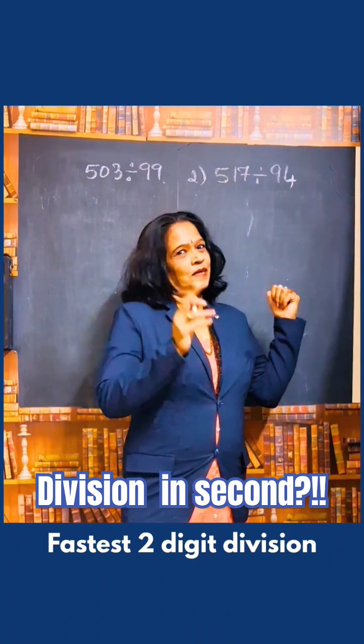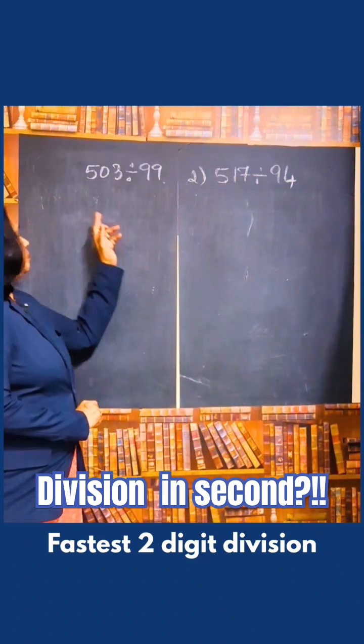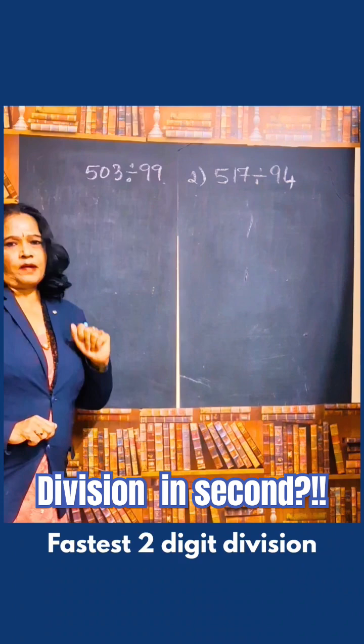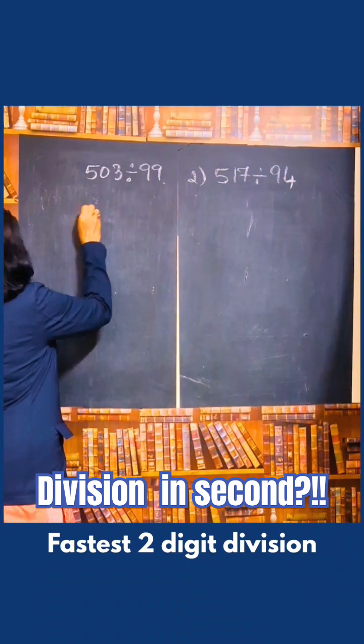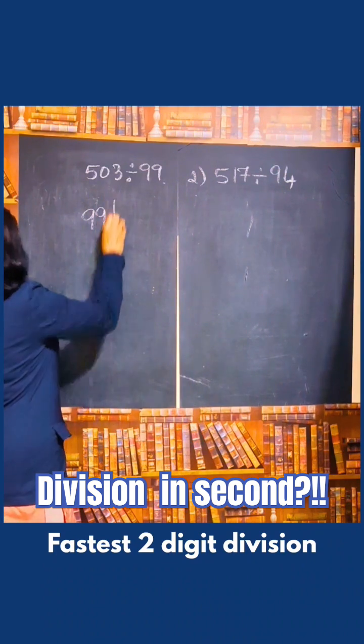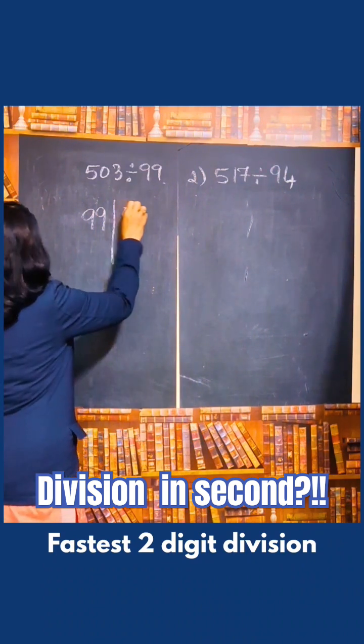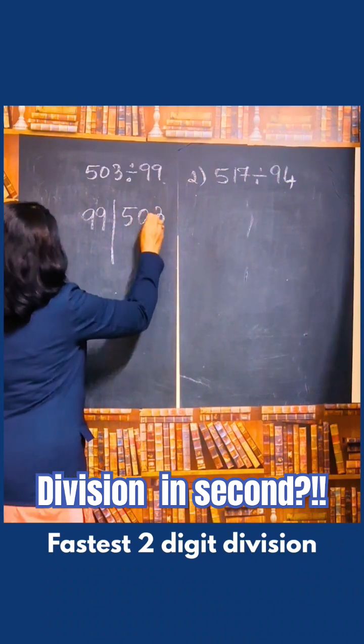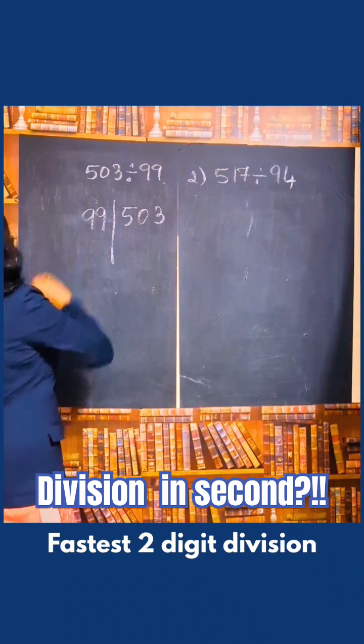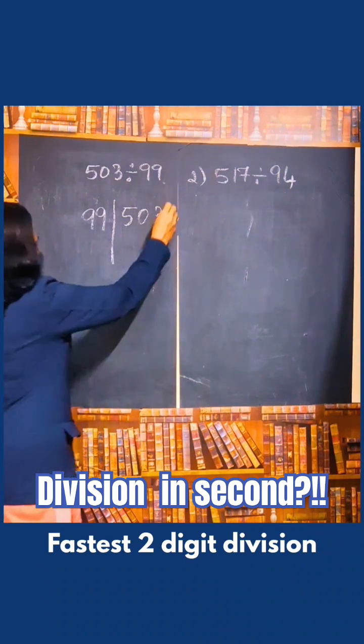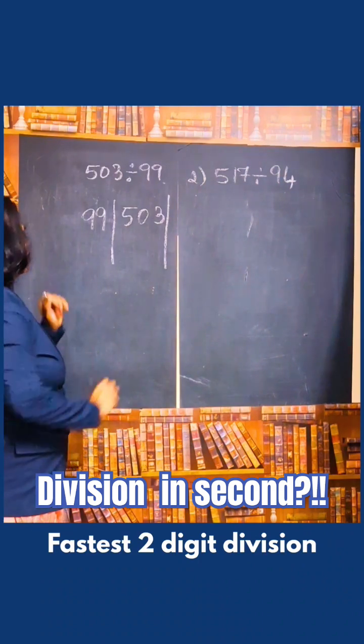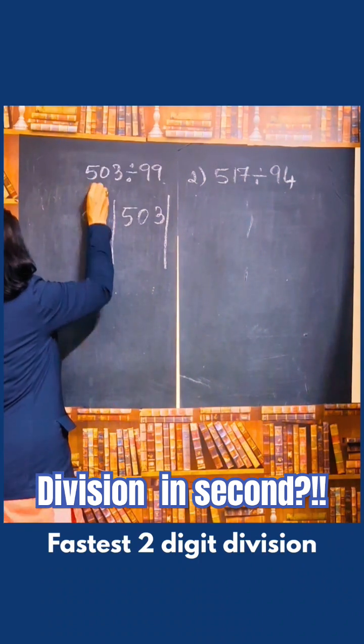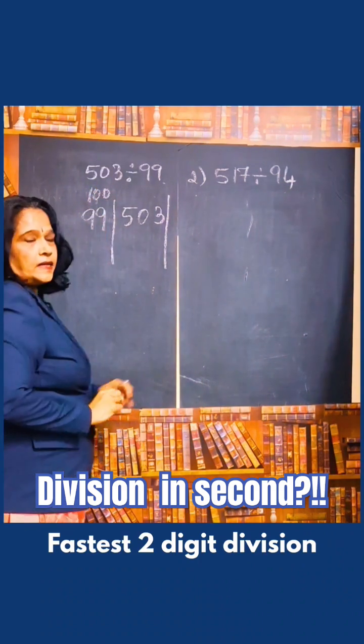Let us start. 503 divided by 99. I'm going to write here 99, the number which is the divisor. Dividend is 105. First, what we have to do is take the base of the number. What is the base of this number? It is very near to 100, so 100 is the base.